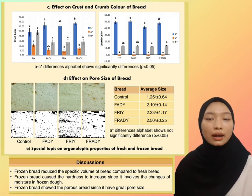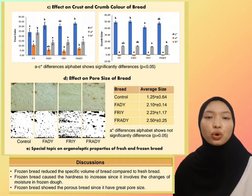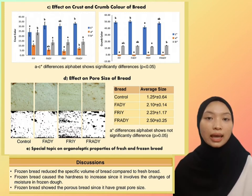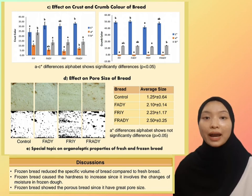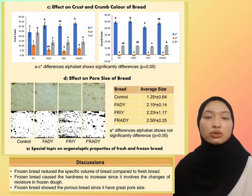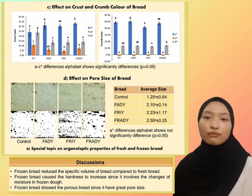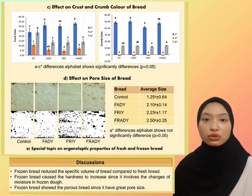For color analysis, frozen bread with instant and active dry yeast showed the highest mean L value on the crust compared to fresh bread. The lighter color of frozen bread crust is due to the formation of ice crystals on the bread surface during frozen storage, which increased the whiteness of the crust. The L value of crumb color showed no significant difference between fresh and frozen bread.